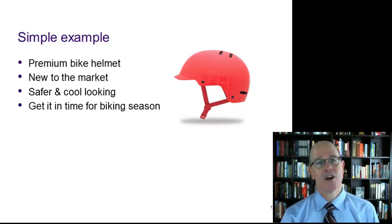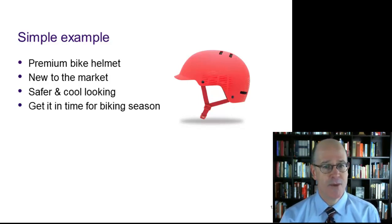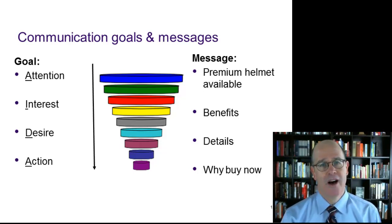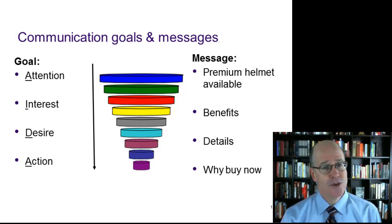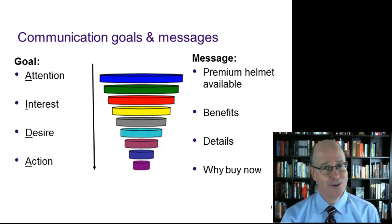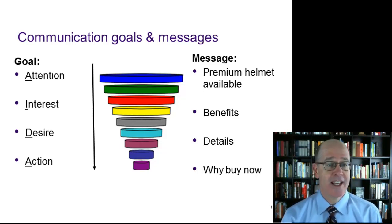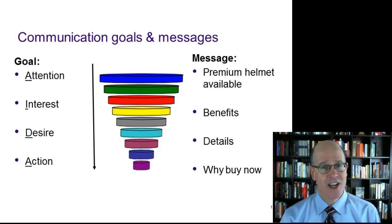Let's use a simple example. Let's say we are going to market with a premium bike helmet. It's new to the market, it's safe and cool looking, and we want to make sure our customers know they should get it now in time for biking season. For the goal of getting attention, we let them know a new premium bike helmet is available. To develop interest, we articulate the benefits: it is very cool looking and safer. To develop desire, we provide details — what colors are available, what styles, what the helmet is made out of, and where to get it. And finally, to compel action, we communicate the why-buy-now message: get it in time for this biking season.